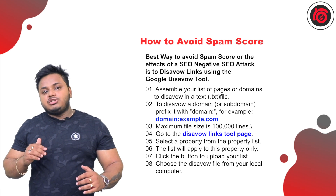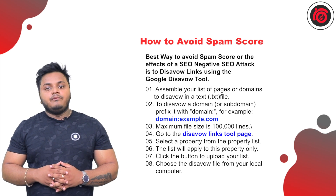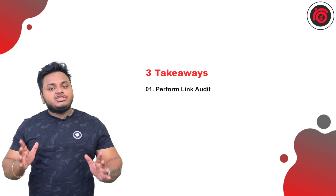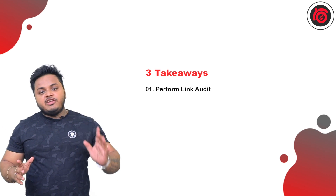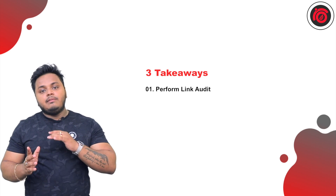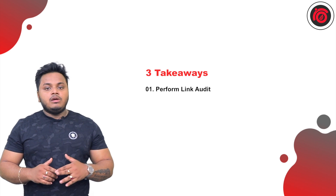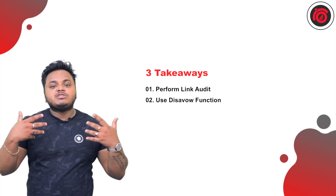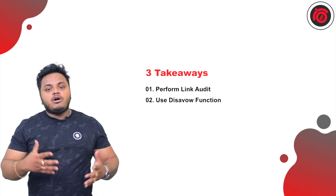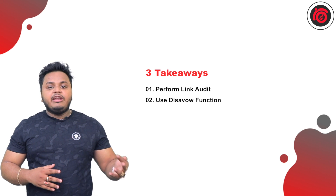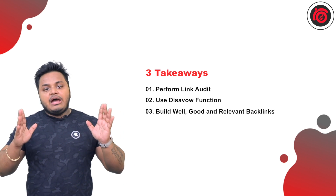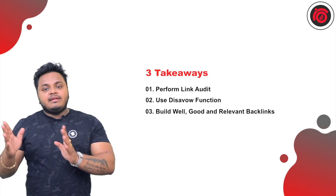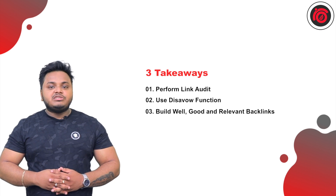My recommendation is to perform this every 21 days, as this helps keep your link profile healthy and ensures you are not getting any penalty from Google. Three takeaways: first, always perform a link audit and keep spam score as low as possible, below 5% if possible. Second, use the disavow function to control spam and get rid of negative backlinks. Third, always build relevant backlinks to your niche — this helps prevent spam backlinks in the future.